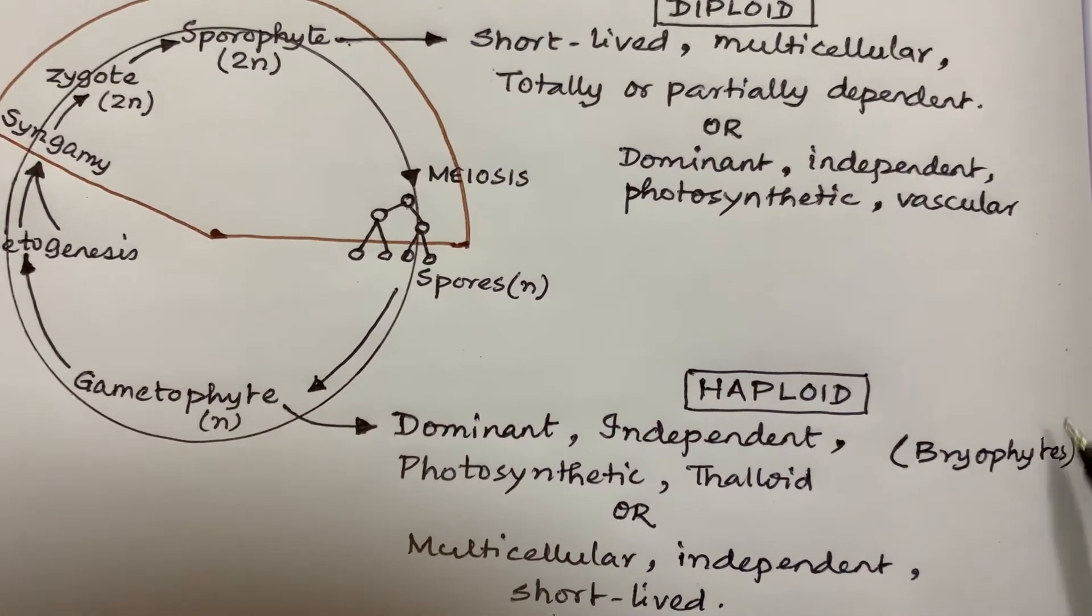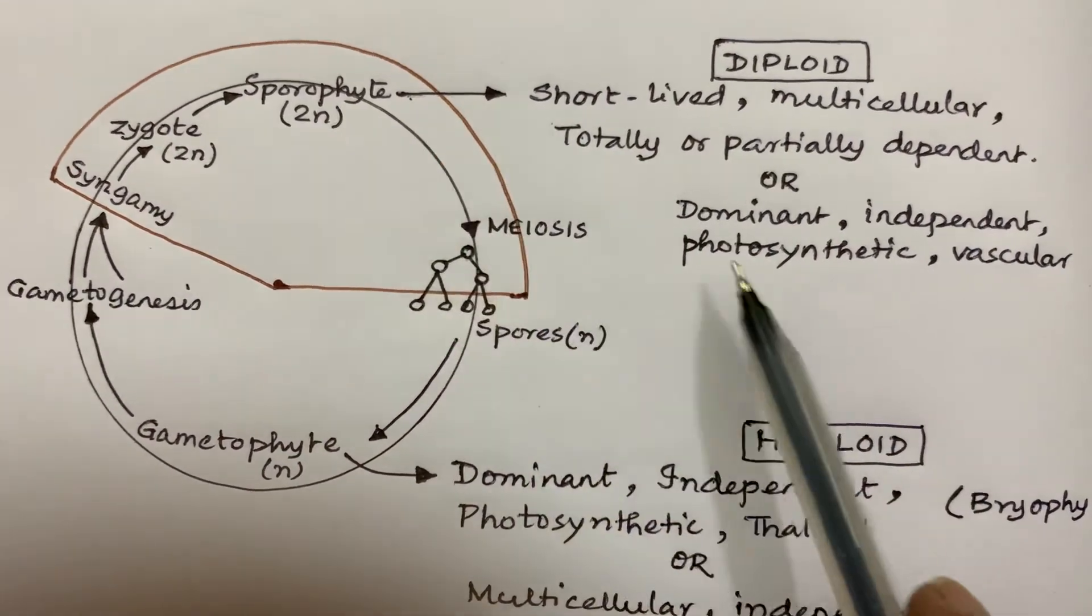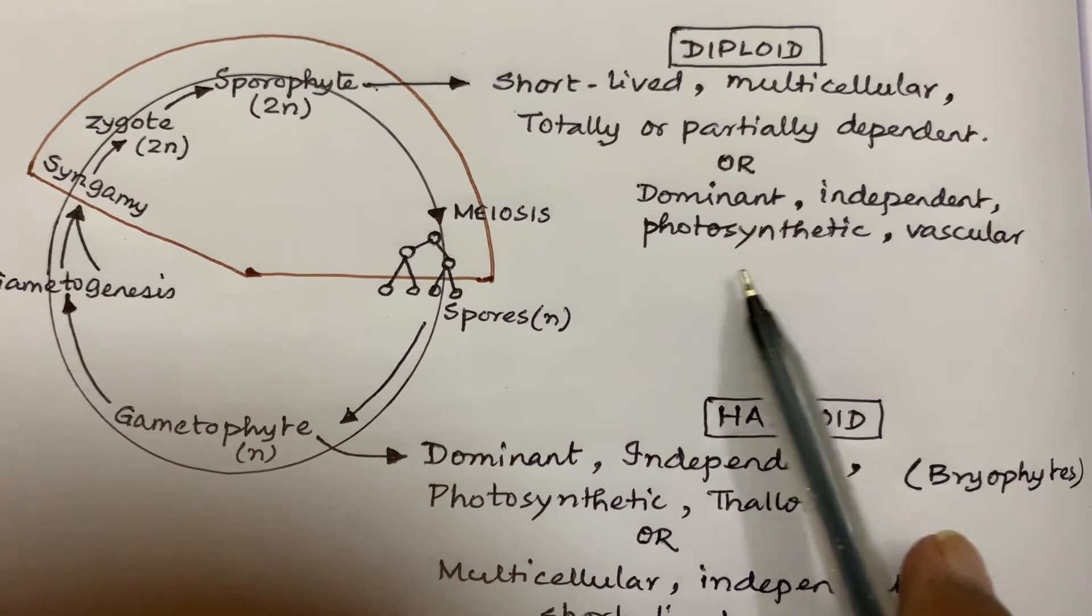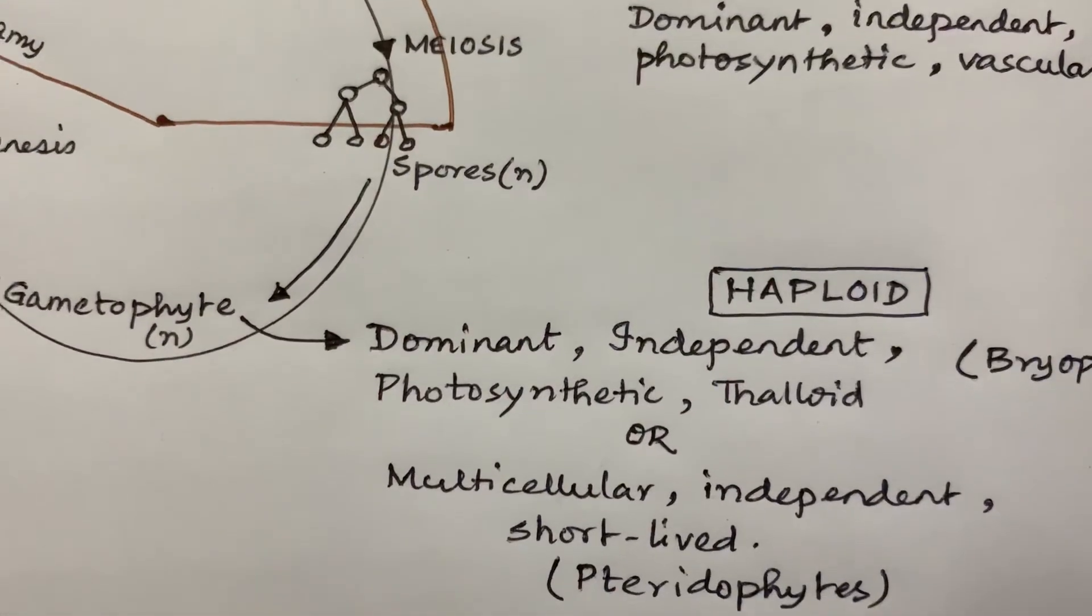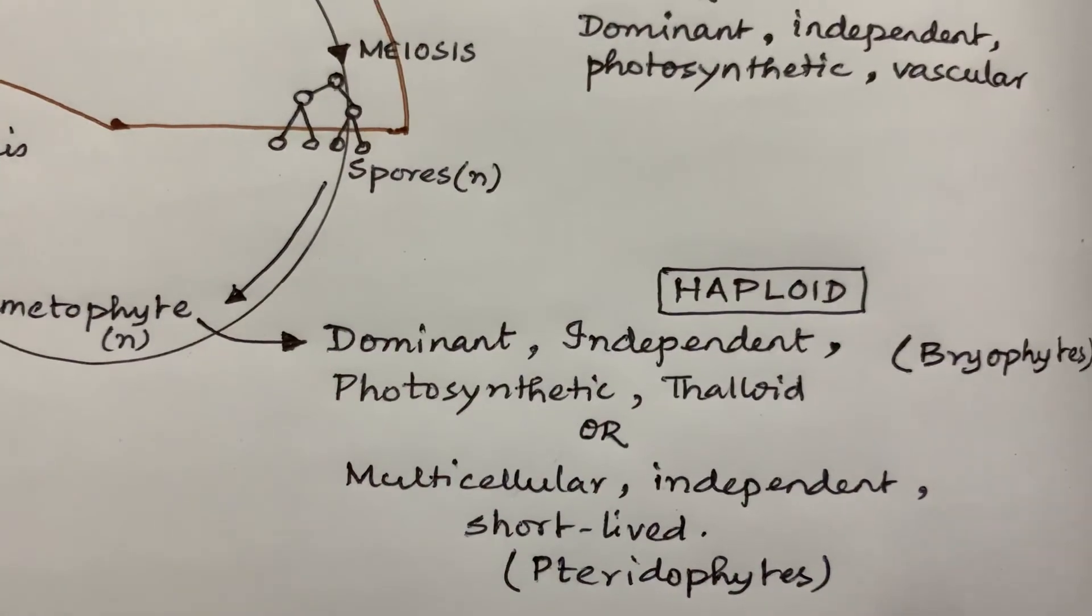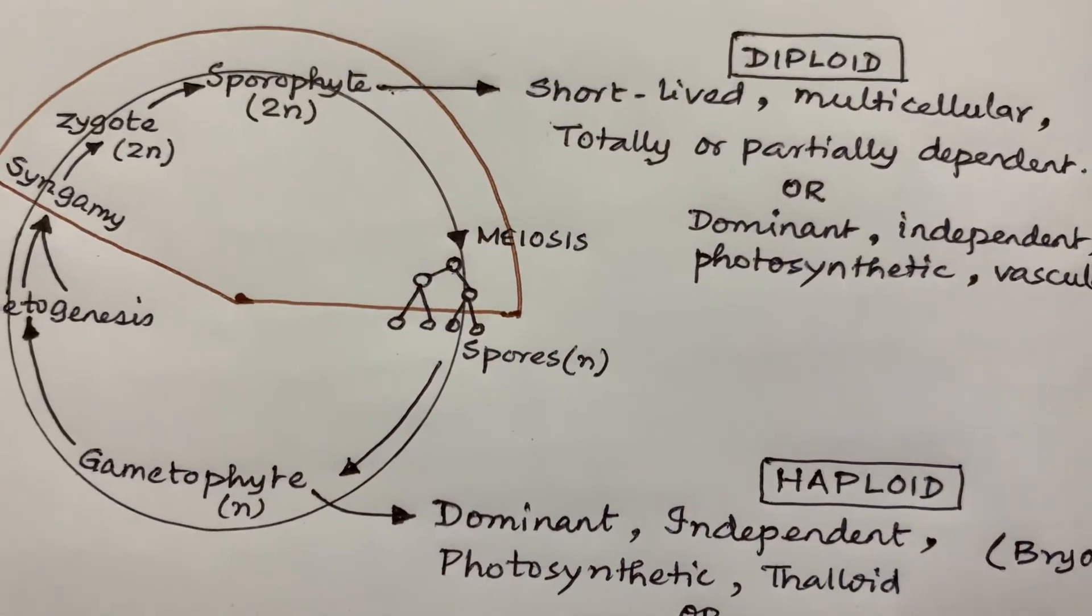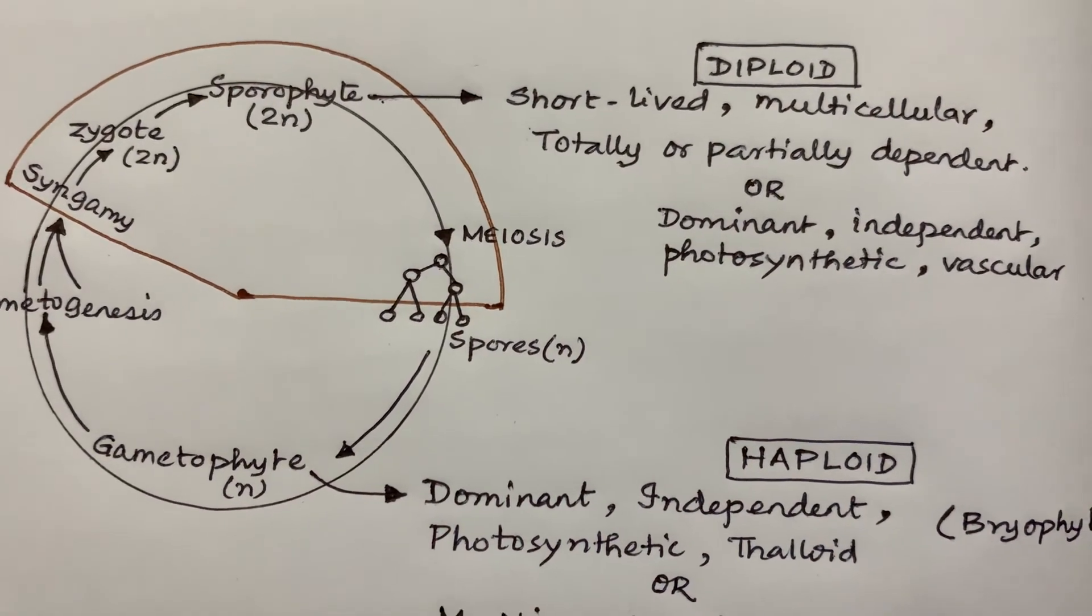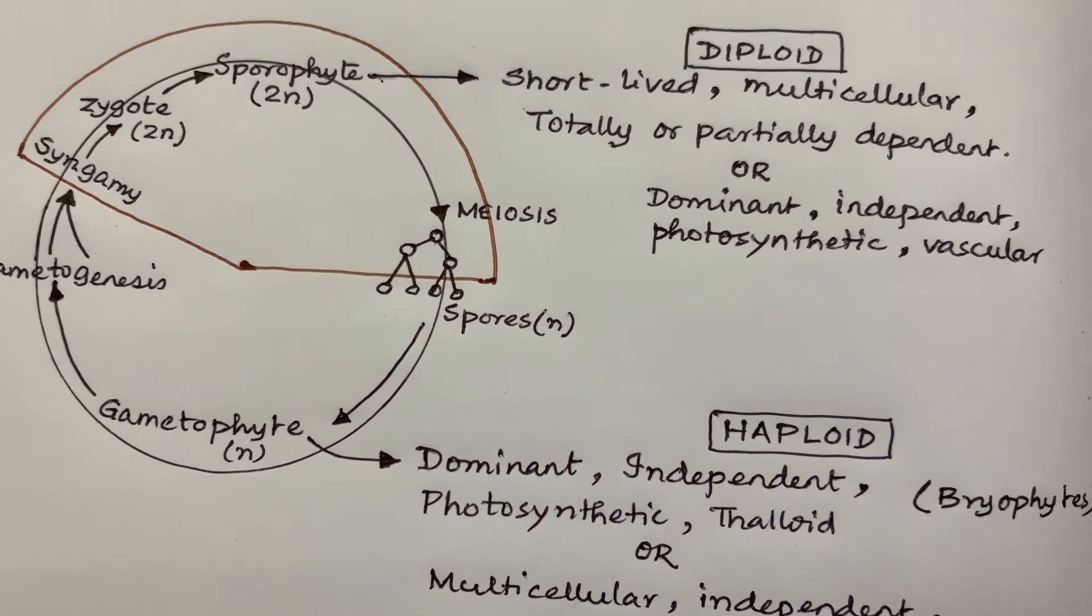In which type of plant is the diploid dominant, independent, and photosynthetic, and the haploid is multicellular, independent, and short-lived? You have to say pteridophytes. That much only you have to remember. If you have liked my video, then please do subscribe. Thank you.